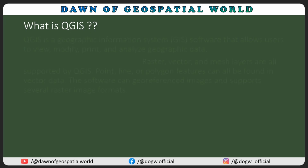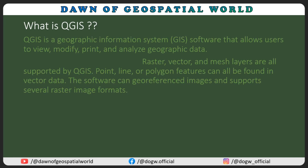What is QGIS? QGIS is a geographic information system software that allows users to view, modify, print, and analyze geographic data. Raster, vector, and mesh layers are all supported by QGIS. Point, line, or polygon features can all be found in vector data. The software can georeference images and supports several raster image formats.